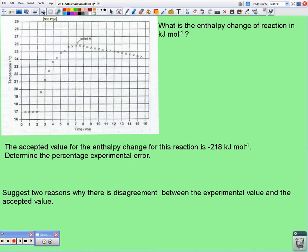But, now they want the enthalpy change of reaction in kilojoules per mole. So, if we take delta H being equal to, the temperature's increased, of course, which is evident from the graph. So, we know it's an exothermic reaction.